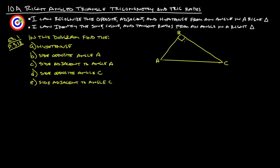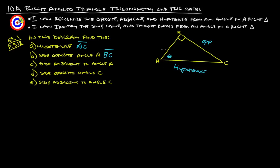Regardless of what angle you're talking about, the side across from the right angle is always the hypotenuse — so the hypotenuse here is side AC. The side opposite angle A is side BC, and then the side adjacent to angle A: there are two sides right next to angle A, but one is already the hypotenuse, so the adjacent side has to be side AB.